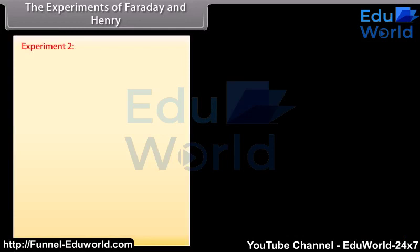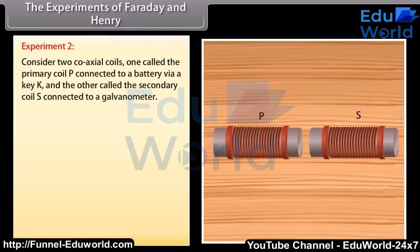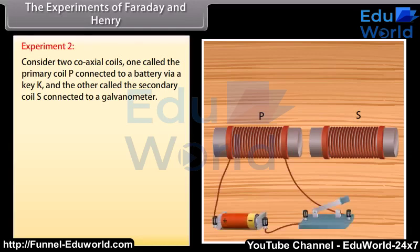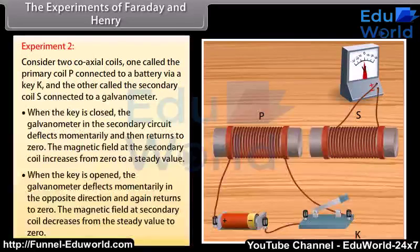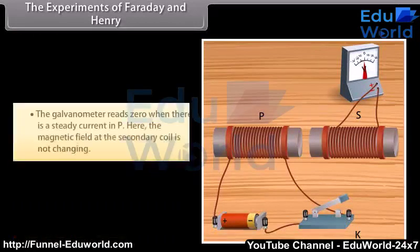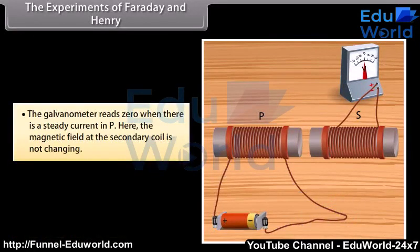Experiment 2: Consider two coaxial coils — one called the primary coil P connected to a battery via a key K, and the other called the secondary coil S connected to a galvanometer. When the key is closed, the galvanometer in the secondary circuit deflects momentarily and then returns to zero, as the magnetic field at the secondary coil increases from zero to a steady value. When the key is opened, the galvanometer deflects momentarily in the opposite direction and again returns to zero, as the magnetic field at the secondary coil decreases from the steady value to zero. The galvanometer reads zero when there is a steady current in P, because the magnetic field at the secondary coil is not changing.